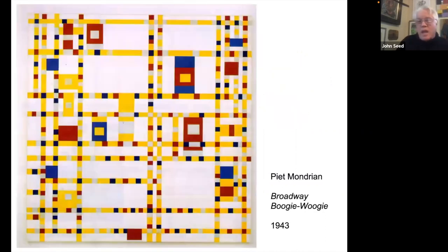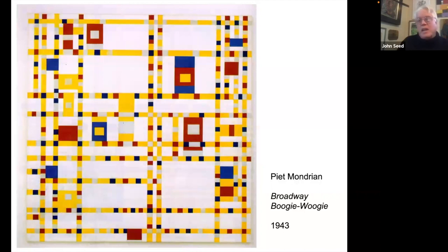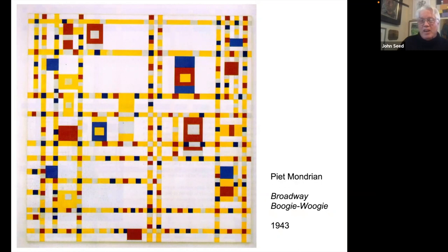We're almost at the United States now. Mondrian brought that to the United States as one of a number of very influential Europeans who came here and influenced the course of modern art. When he was in New York City, he apparently really liked to go out dancing — he liked dancing to the Boogie Woogie. He also gets credit for recognizing Jackson Pollock when he saw Pollock painting in Peggy Guggenheim's gallery. He looked at it a long time and then told her, 'I think that's the most interesting painting I've seen in a long time.'